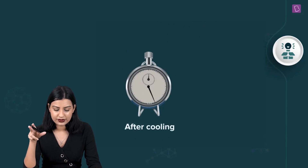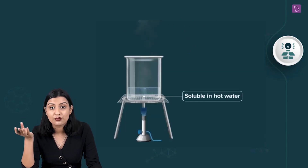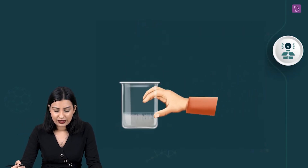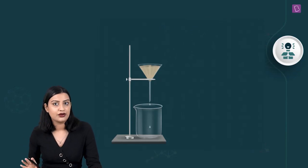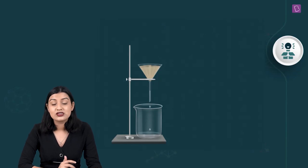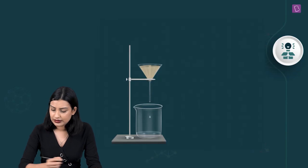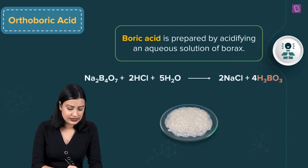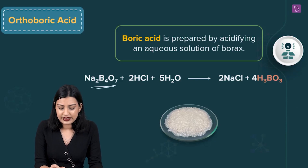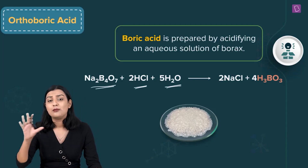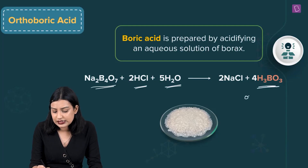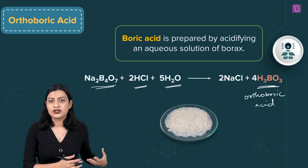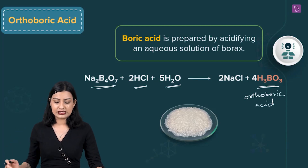After adding HCl, we allow the mixture to cool. Upon cooling, crystals are formed. These crystals are filtered using a filter paper on a funnel. The crystals obtained are orthoboric acid, H₃BO₃.